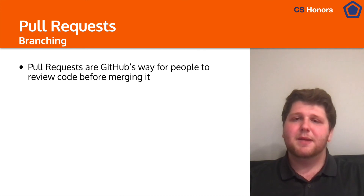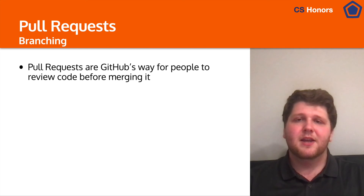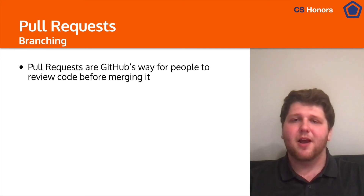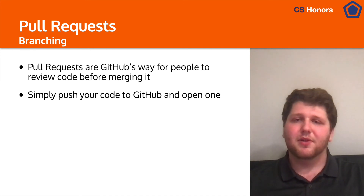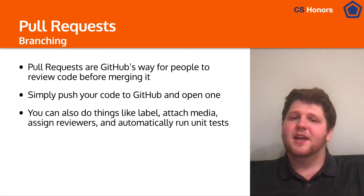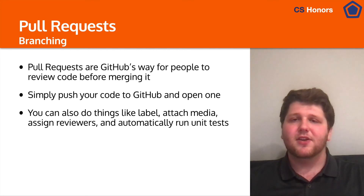So let's talk about pull requests. Pull requests are GitHub's way of allowing people to review your code before it gets merged into a branch. This is really useful for larger companies because you're able to have people review your code and make sure there are no bugs before it actually gets added to a product. You simply push your code to GitHub on the new branch, then go to the pull request tab and click Open. You can also add labels, attach media, assign who should be reviewing it, and even automatically run unit tests to check what your code is doing.